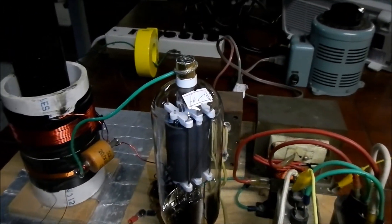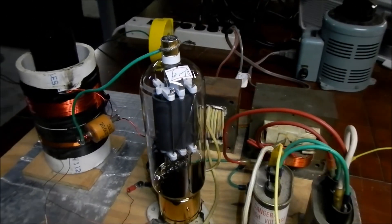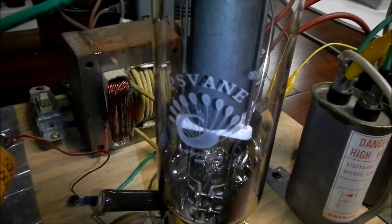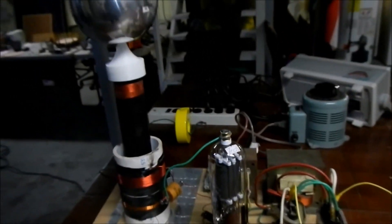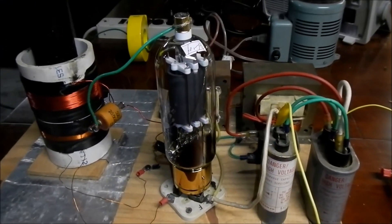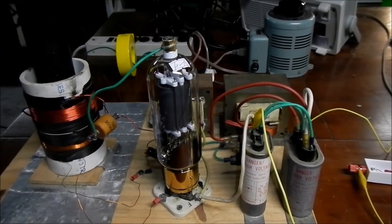Alright, so I've replaced my old vacuum tube with the new PVSane 805 vacuum tube. And we're going to power up the Tesla coil and see if we get better spark performance.